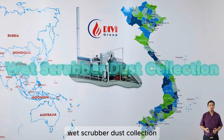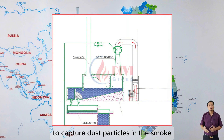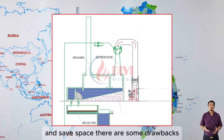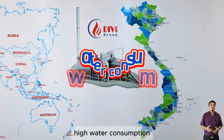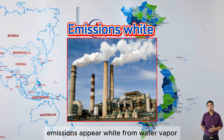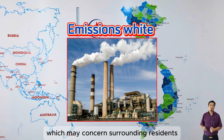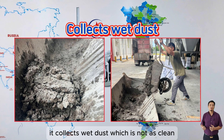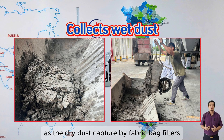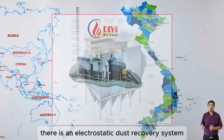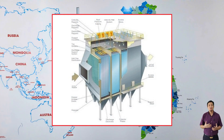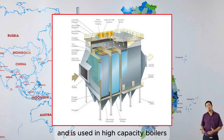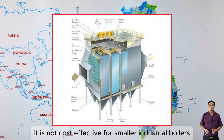Wet scrubber dust collection: this system uses water spray to capture dust particles in the smoke. While it has good dust collection efficiency and saves space, there are some drawbacks: high water consumption, emissions appear white from water vapor which may concern surrounding residents, and it collects wet dust which is not as clean as the dry dust captured by fabric bag filters. Additionally, there is an electrostatic dust recovery system, which typically has a very high investment cost and is used in high capacity boilers. It is not cost effective for smaller industrial boilers and will not be covered in this video.